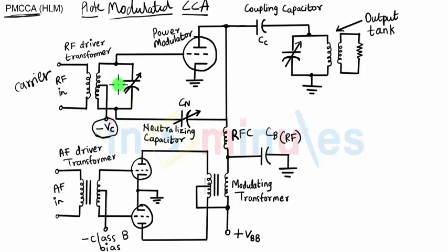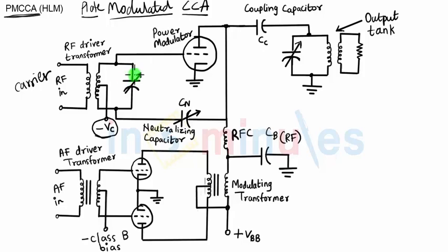This time also there is a negative DC supply present, which instead of being given directly to the grid is given through the center tap terminal of the transformer. The DC signal through the transformer will always reach the grid terminal because the transformer will act as a short for the DC signal. You can see there is no modulating signal given through the grid terminal — that's all we have on the grid terminal.